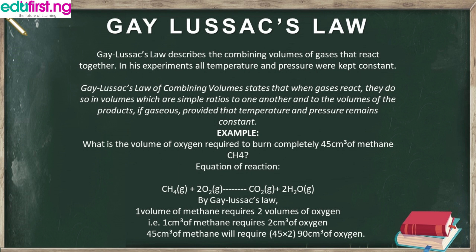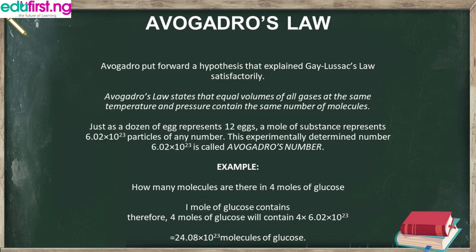Gay-Lussac said that when gases combine they do so in volumes. Methane has no coefficient, so it represents 1 volume. Oxygen has a coefficient of 2, so it represents 2 volumes. Therefore, 1 volume of methane requires 2 volumes of oxygen. Since the question gives 45 cm³ of methane, the oxygen required is 45 × 2 = 90 cm³.